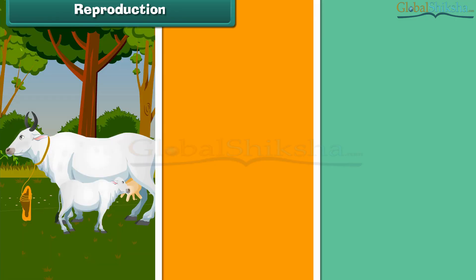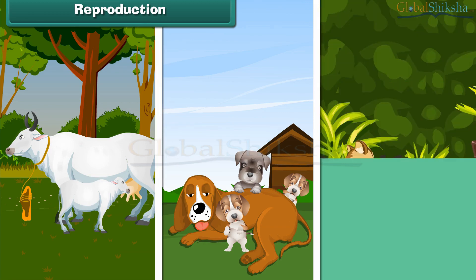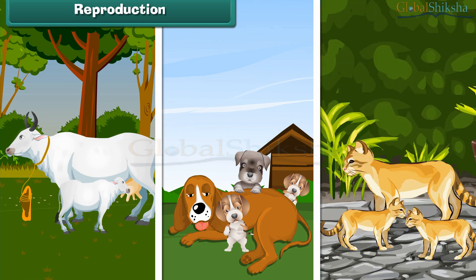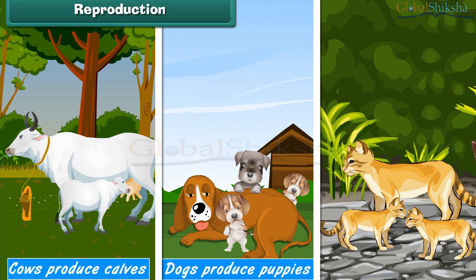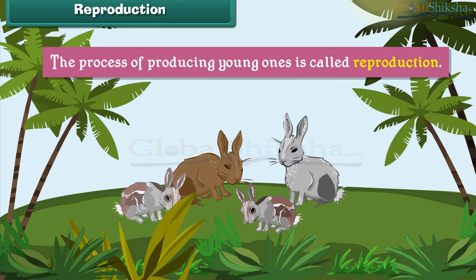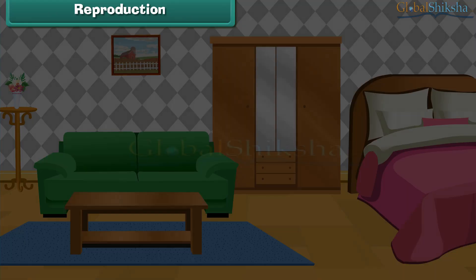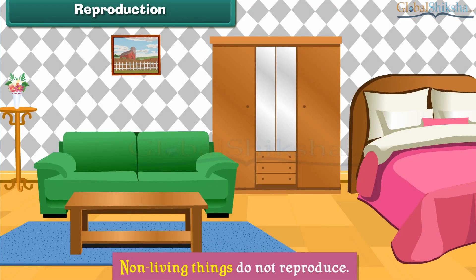All living things produce young ones like them. For example, cows produce calves, dogs produce puppies, and cats produce kittens. The process of producing young ones is called reproduction. Non-living things do not reproduce.